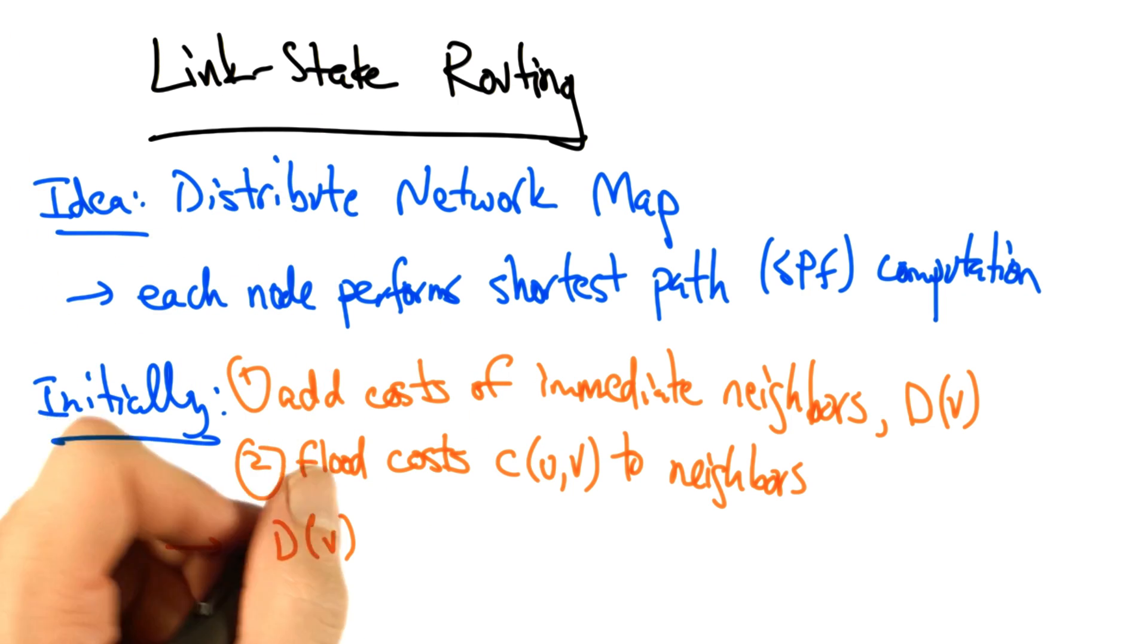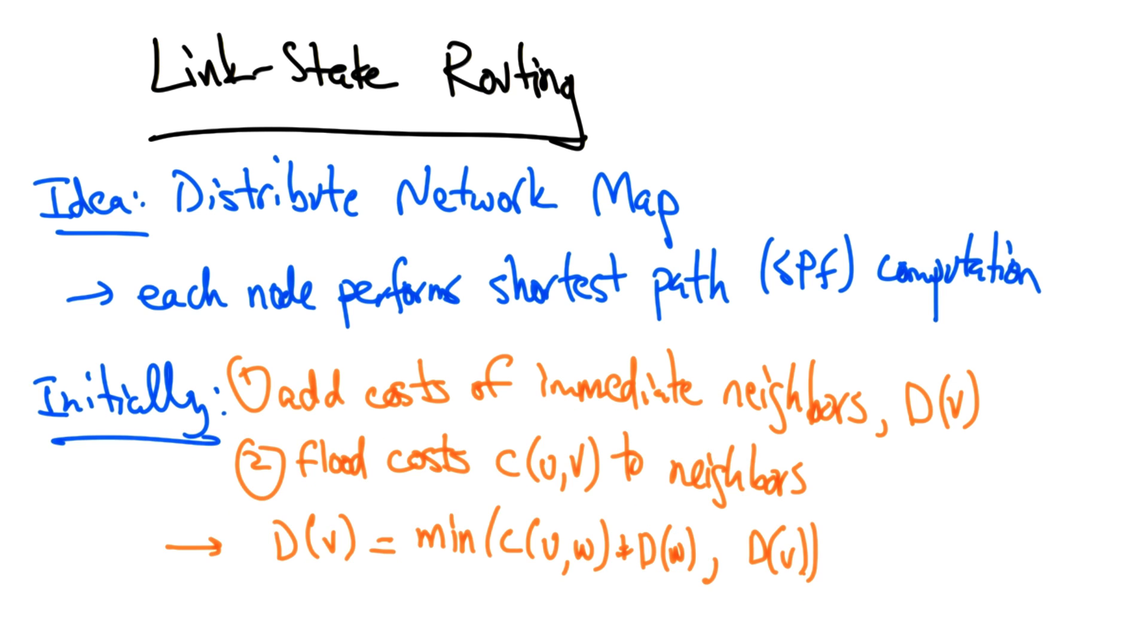And the distance to any node v becomes the minimum of the cost between u and w plus the cost to w, or the current shortest path to v. The shortest path computation is often called the Dijkstra shortest path routing algorithm.